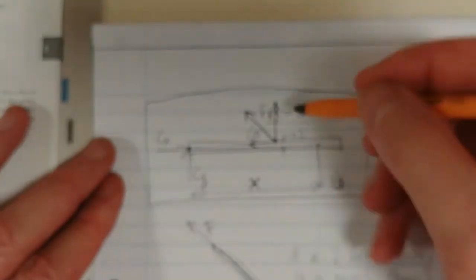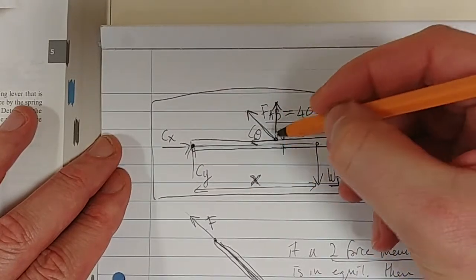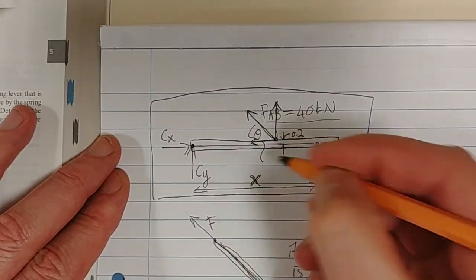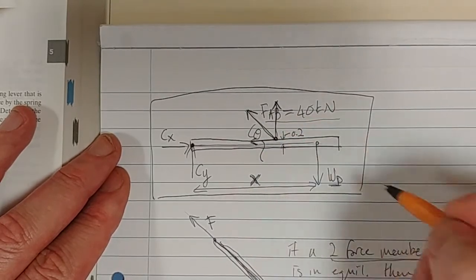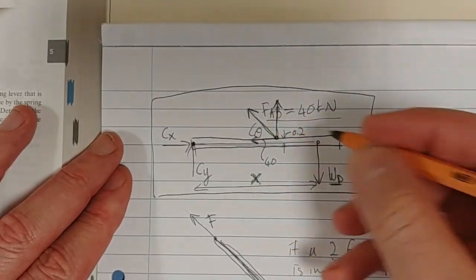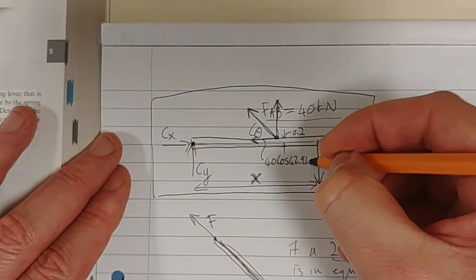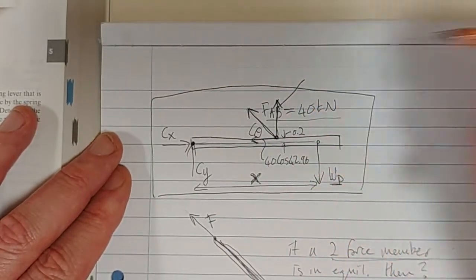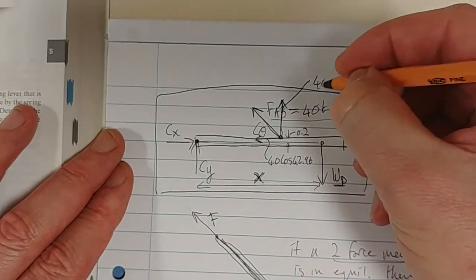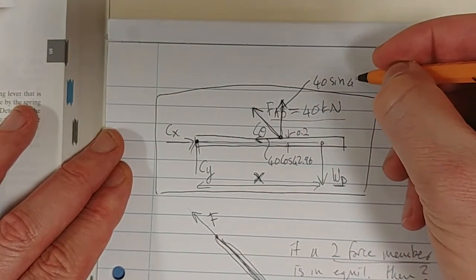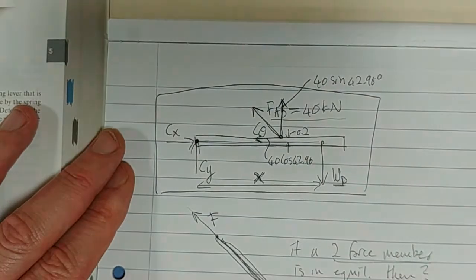So, the first one we need is a moment due to these forces. So what would this be? That X component would be 40 cos 42.96. And this vertical component will be 40 sin 42.96. Those are the two components there.